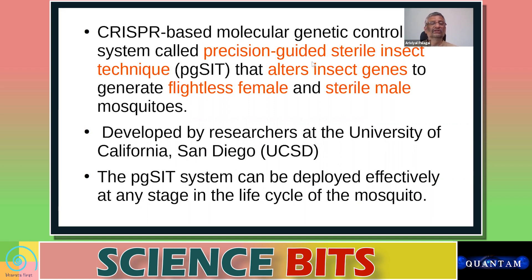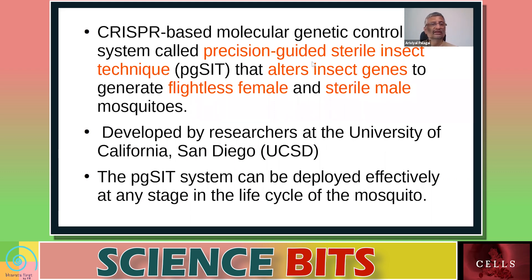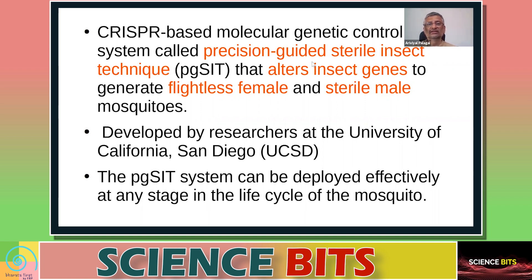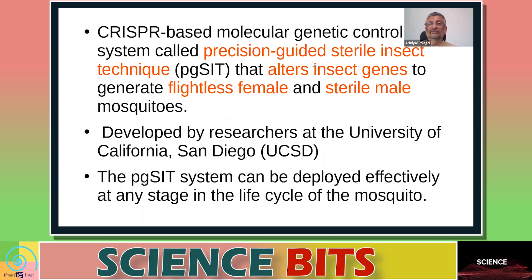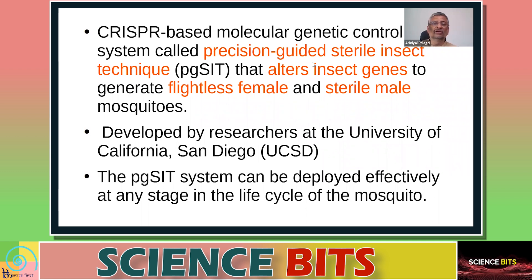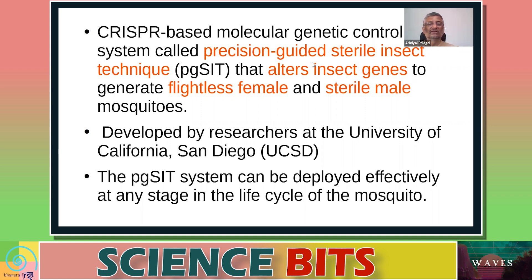People are looking for alternatives, and with new understanding in molecular biology, one alternative that has emerged is the Precision Guided Sterile Insect Technique, or PGSIT. This technique alters the genes of the insect so that female mosquitoes born are flightless and cannot carry pathogens to bite humans. It also produces sterile males that cannot produce offspring.